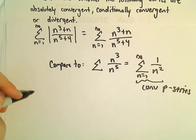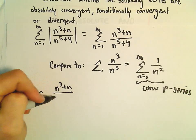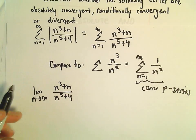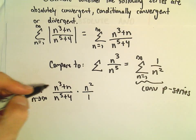So if we do our limit as n goes to infinity of n cubed plus n over n to the 5th plus 4, we would divide by 1 over n squared, or equivalently multiply by n squared over 1.